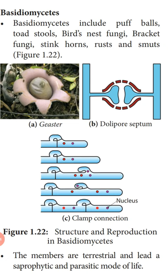Good morning children, welcome to our next class of Botany. In today's class, we will be studying two classes of our syllabus: Basidiomycetes and Deuteromycetes. In previous classes, we studied the general characteristics of three classes — Oomycetes, Ascomycetes, and Zygomycetes. Today we study the remaining two. After that, we will study the economic importance of fungi and their symbiotic associations.